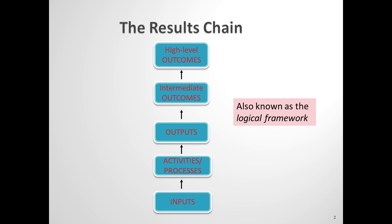Inputs are the raw materials that are used to carry out activities — work processes. In turn, groups of linked activities are what produces outputs, which are the services that we deliver to our external clients. Outputs in turn generate outcomes: in the first instance, they generate intermediate outcomes, and these in turn contribute to higher level outcomes. So the results chain is a formal articulation of this.